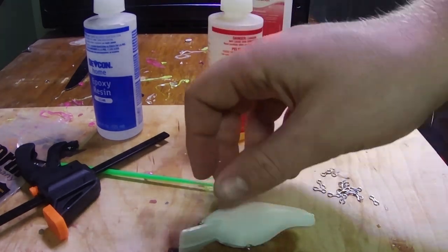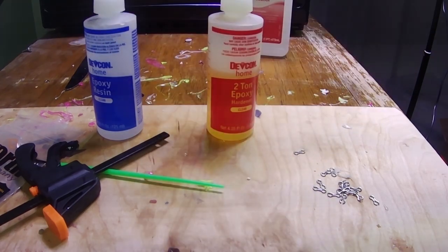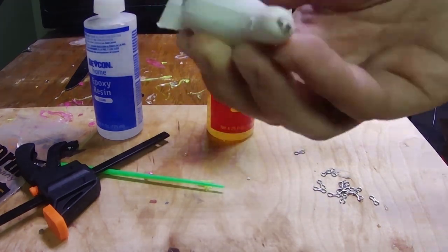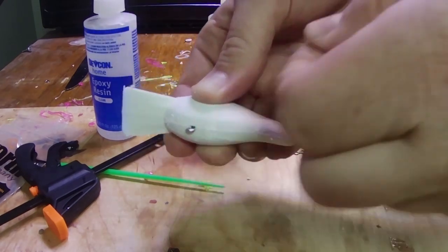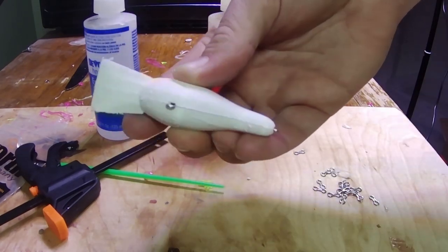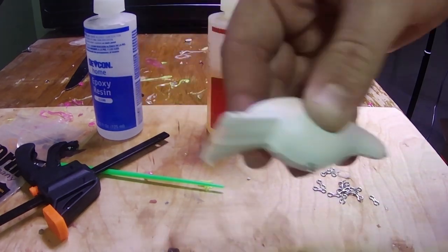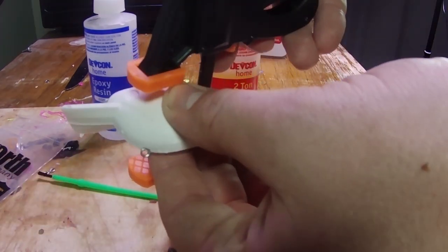So after we put the epoxy on, you literally just put these together. You're going to want to move these to the center and just center these out. The little hook hangers, they might be a little one side. And then you're just going to put a bar clamp around it to hold it together.